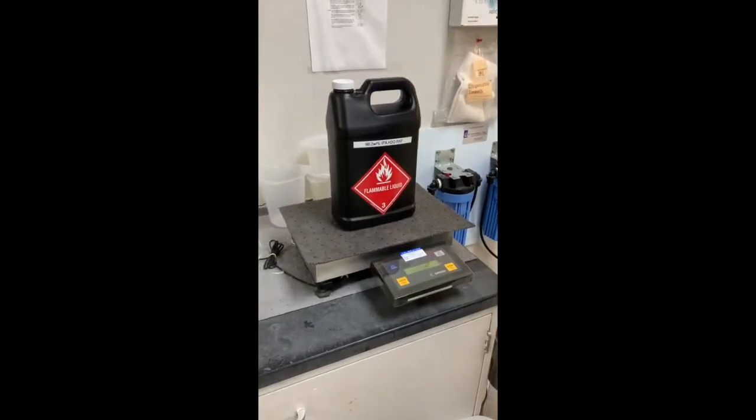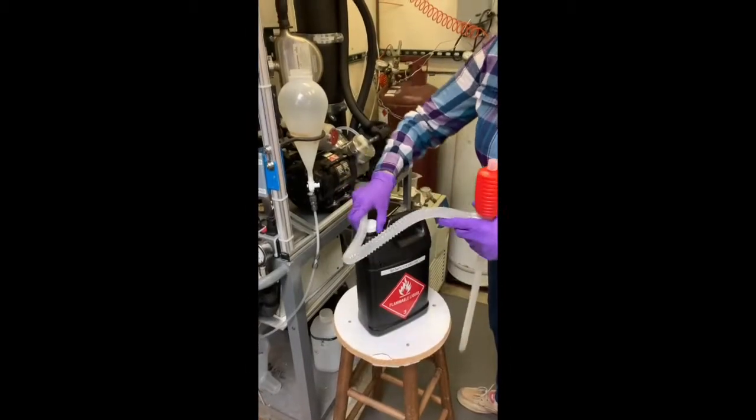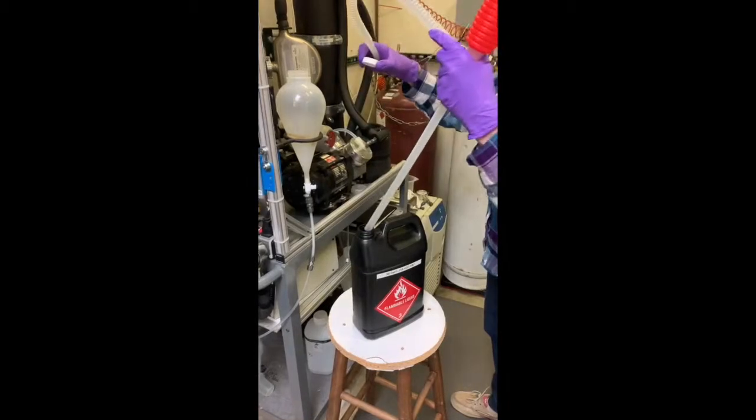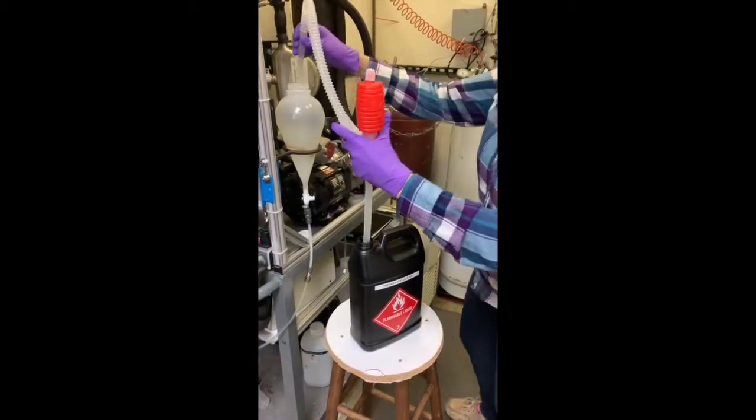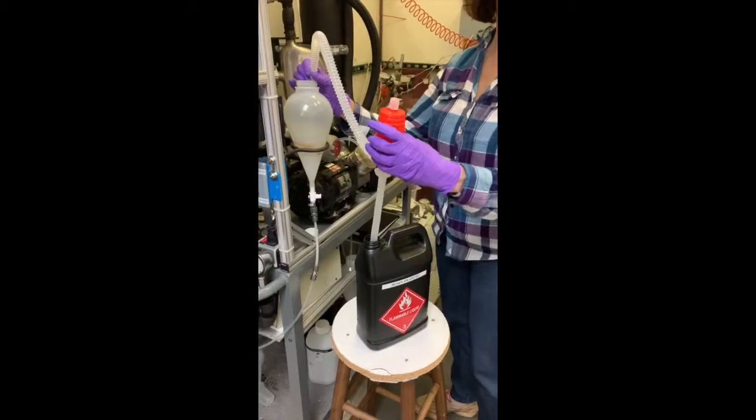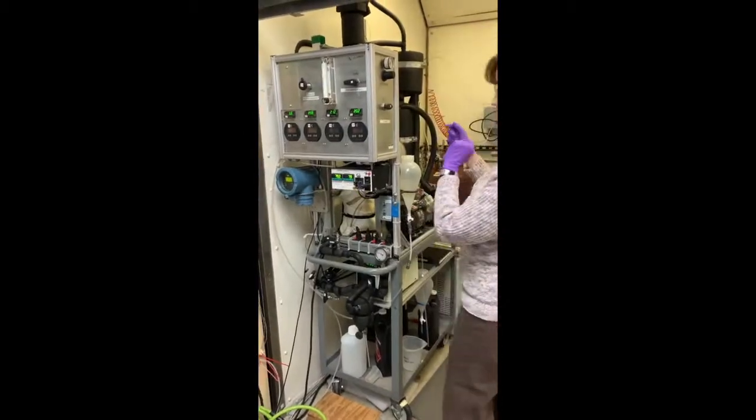The feed sample is weighed before it is placed into the system. Once the system is filled with the IPA water mixture, it is left to heat until it reaches the desired temperature. The membrane is bypassed during this procedure so no separation occurs at this time.